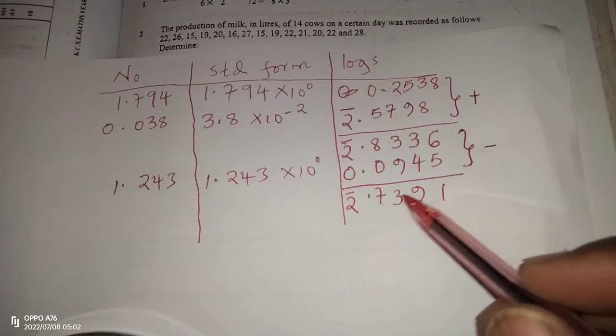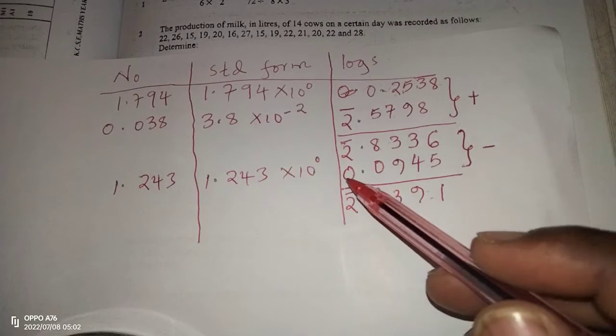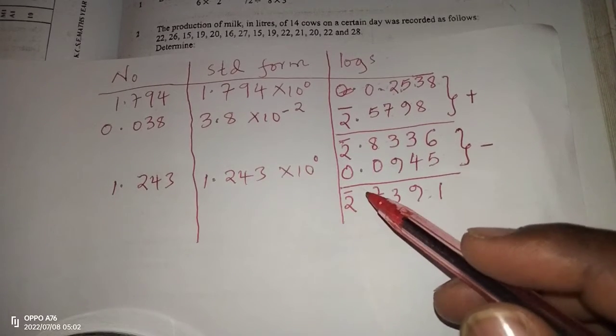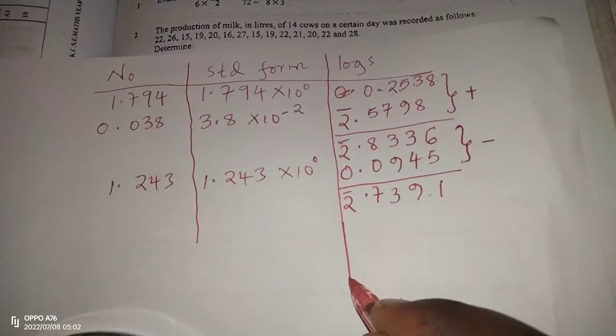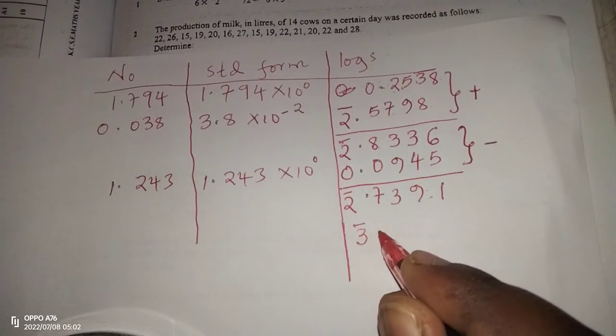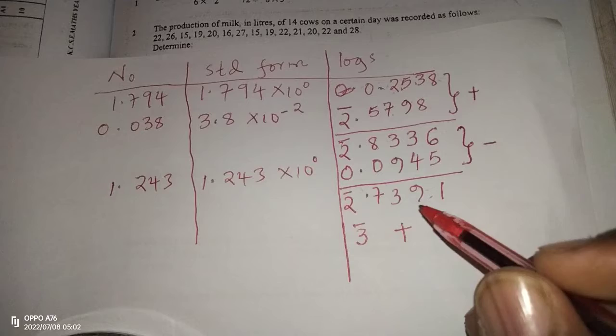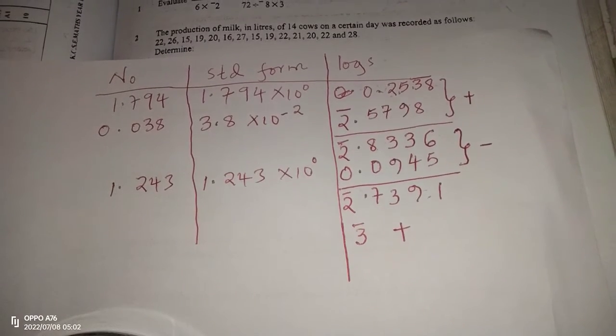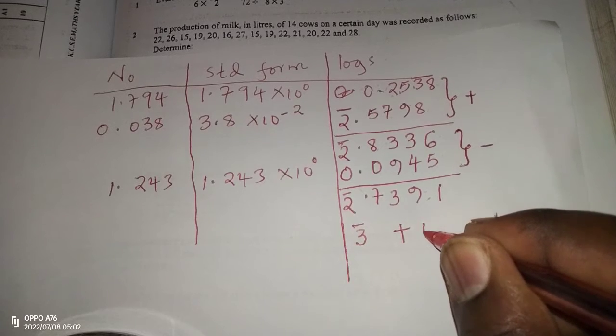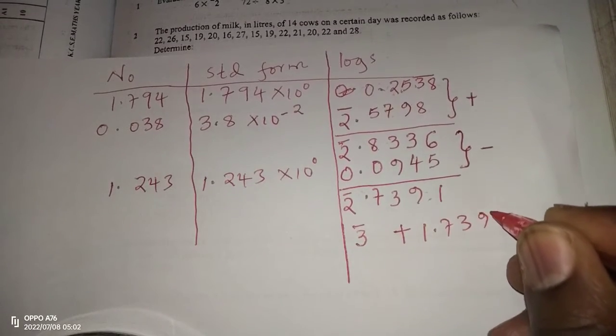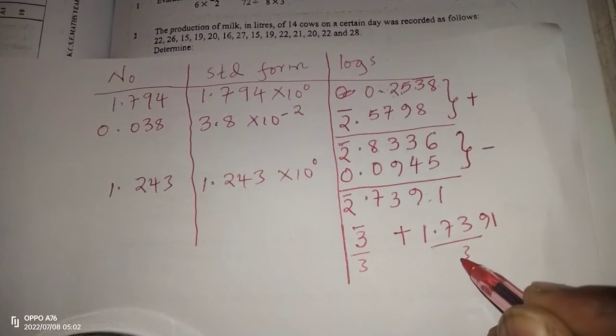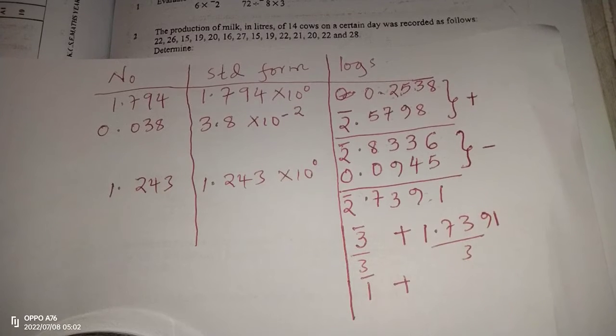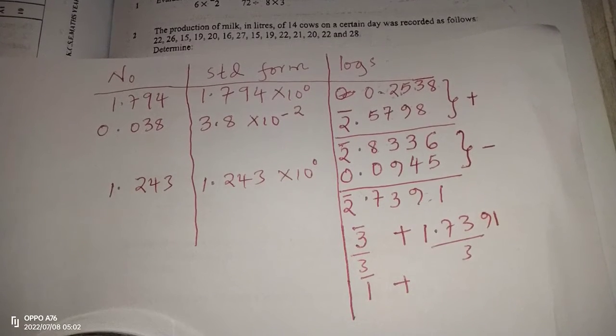But now when we consider the two sides of these logarithms, the characteristic part is not divisible by 3. So we make it divisible by 3 by borrowing 1, and borrowing 1 from the characteristic part makes it negative 3. Then the mantissa part, which was 0.7391, the one we've borrowed from the characteristic part, now we add it to the mantissa side, such that instead of 0.7391, we will have 1.7391. And we now divide by 3 both sides, such that the characteristic part becomes bar 1, and the mantissa part becomes 0.5797, which now makes an overall logarithm of bar 1 point 5797.